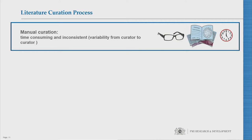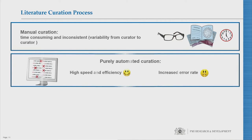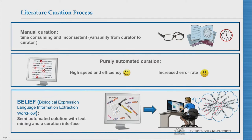There are a number of ways you can curate. Manual curation is very time-consuming and can vary between independent curators. Purely automated curation has very high speed and efficiency; however, if the recall and precision are imbalanced, you may miss many statements or have an increased error rate. As a solution, we are developing BELIEF — the Biological Expression Language Information Extraction workflow — which is a semi-automated solution. It has a text mining part and an interface for scientists that allows manual correction of statements.